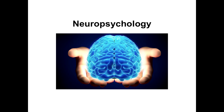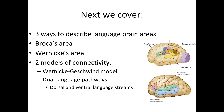Welcome back to neuropsychology. Today we are going to cover the neural aspect of language. We'll talk about three ways to describe language brain areas, two famous brain areas — Broca's area and Wernicke's area — and two different models of connectivity: the older Wernicke-Geschwind model and the more detailed dual language pathways model, which includes a dorsal and a ventral stream, similar to the visual system.